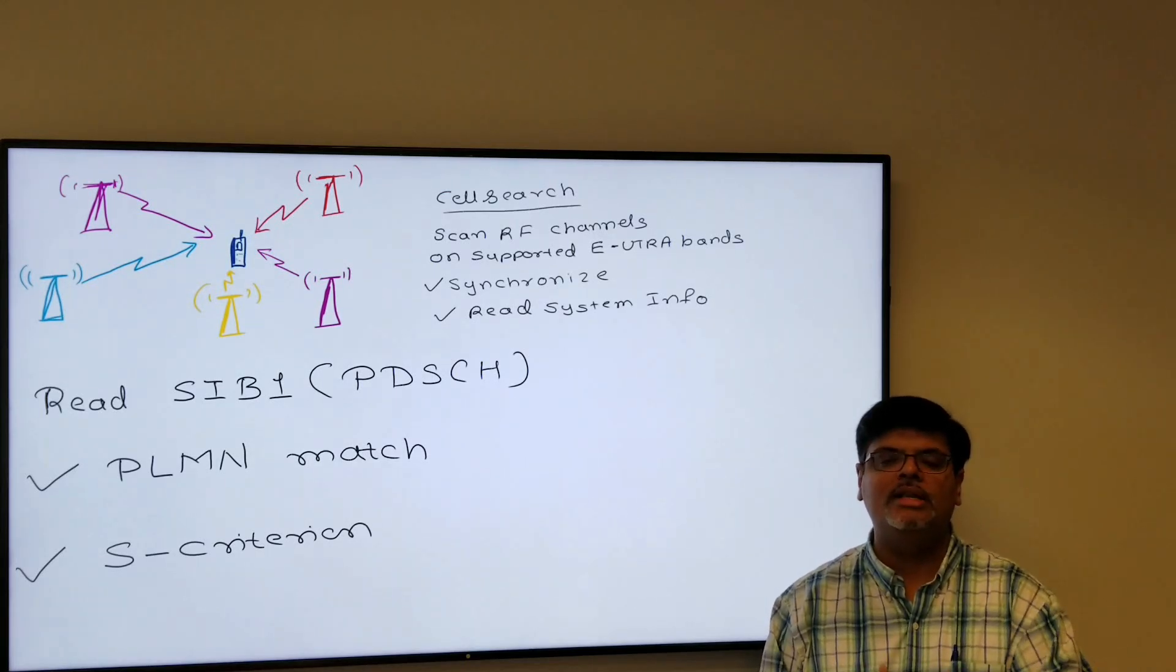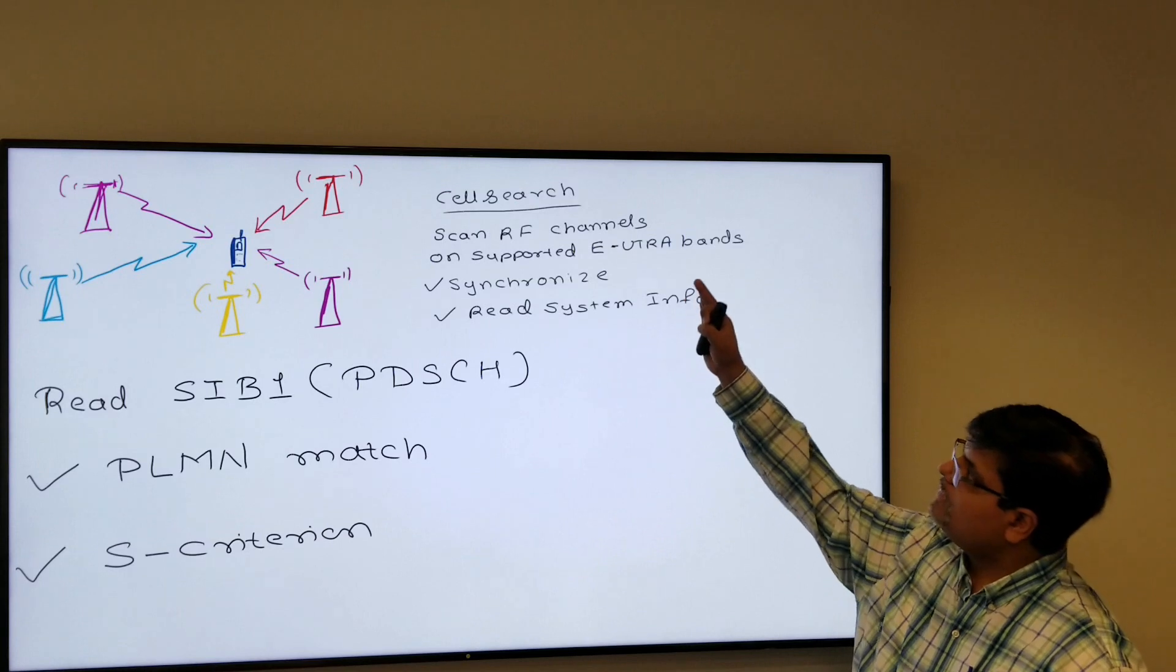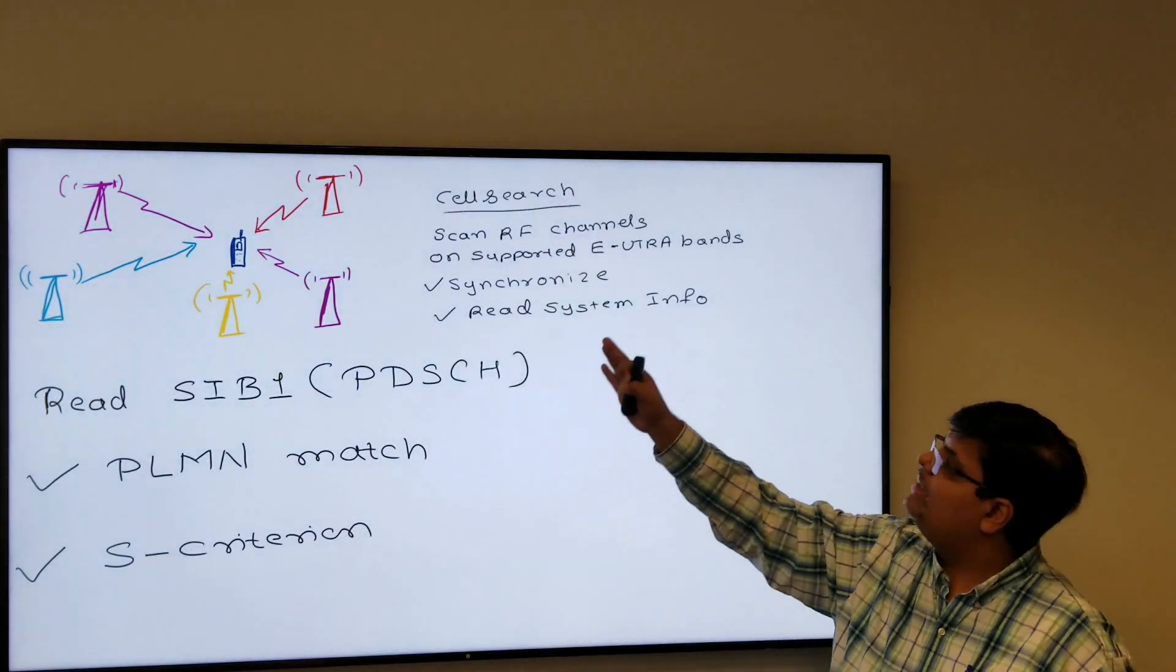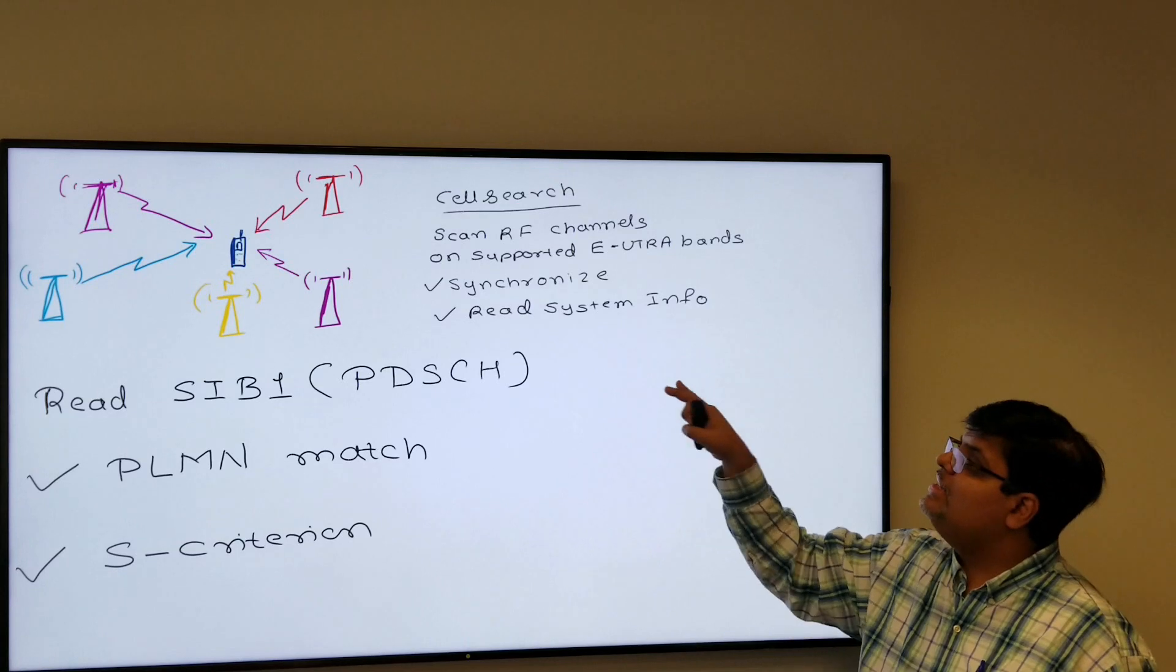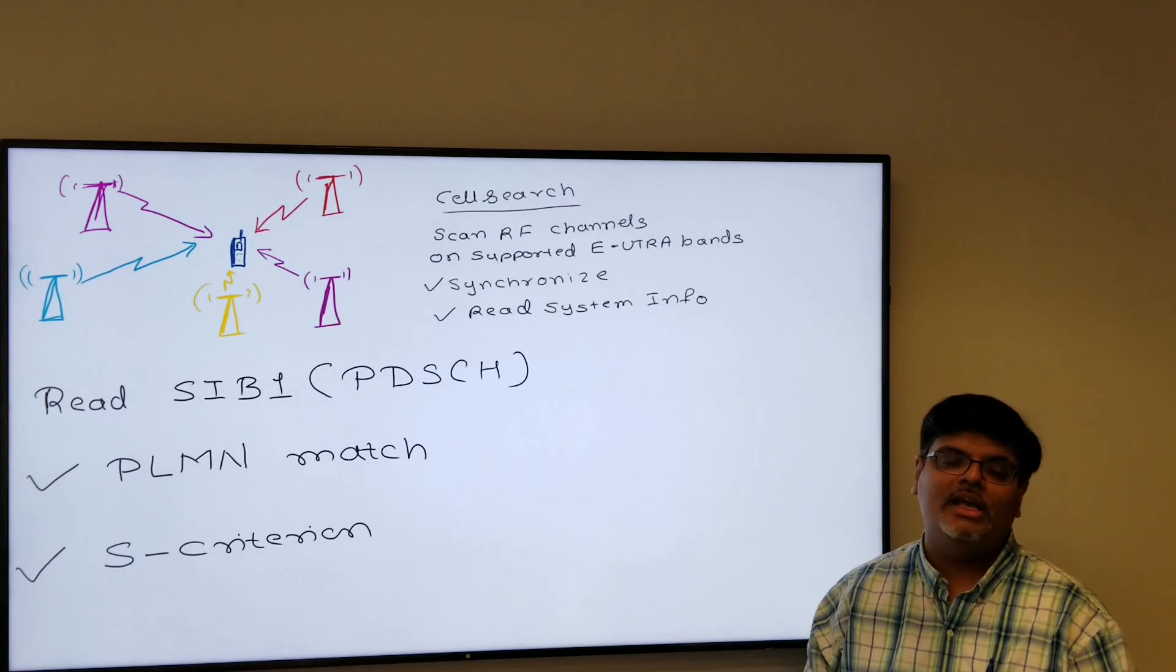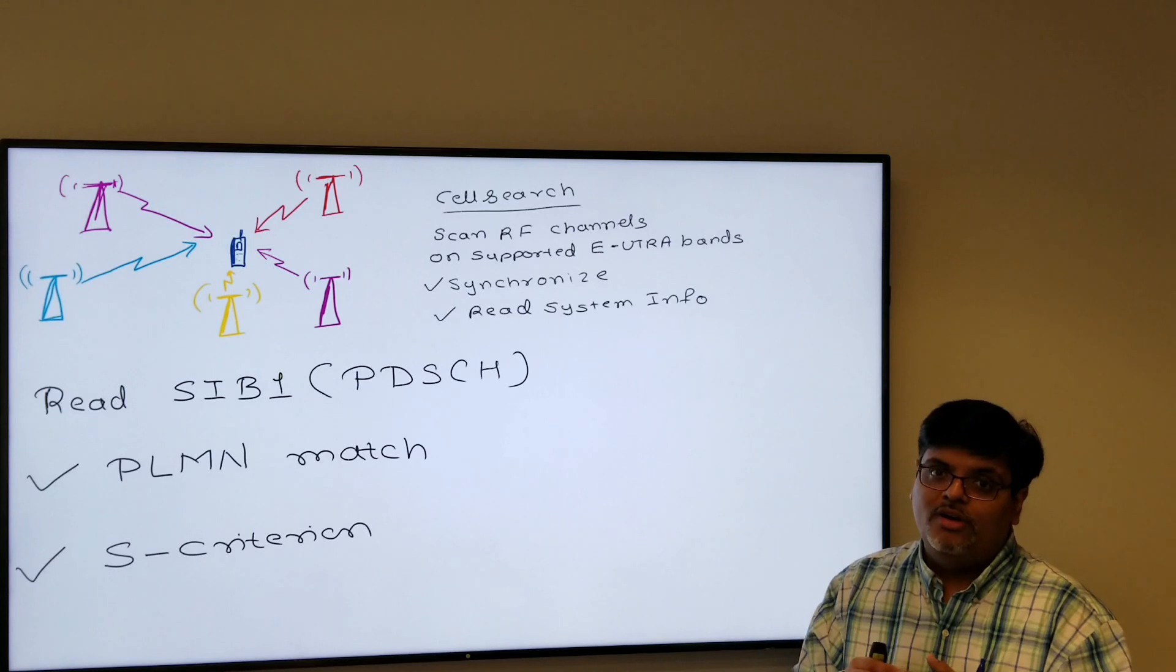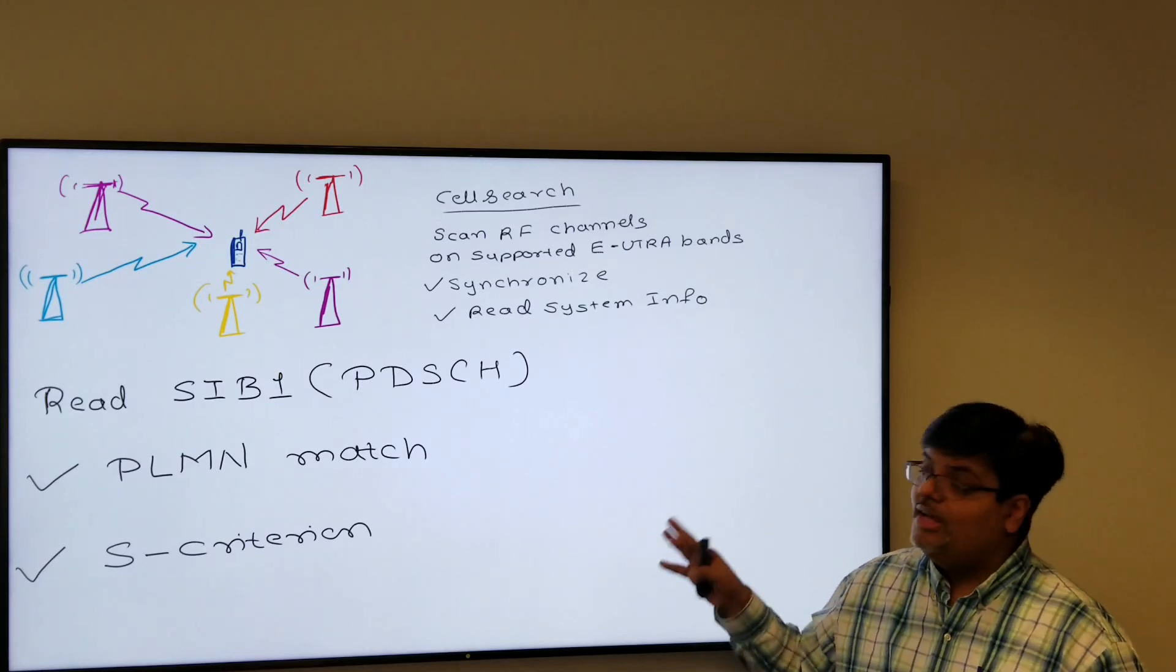What it does is, again going through the summary: first the UE scans all the RF channels, read everybody, AT&T, Verizon, T-Mobile, Sprint, then synchronize, read the SSS, PSS, then read the MIB, and then read the SIB. In the SIB you will come to know whether this PLMN matches to the PLMN of the SIM. SIM already has a PLMN written on it. It will read the SIM and see whether it's a suitable cell or it's a confirmed cell or the same match of PLMN. It will go and camp on to the network after it successfully satisfies the S criteria.